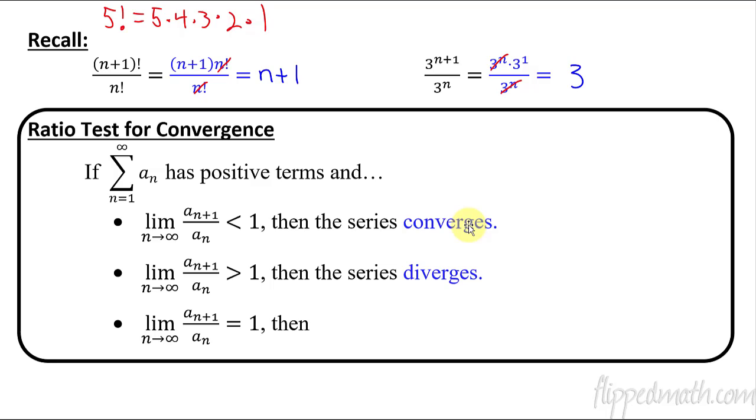Because if it's less than 1 and it converges, and if it's greater than 1 and then diverges, if it equals 1, then we just have to use another test. We don't have enough information, so we have to keep working.